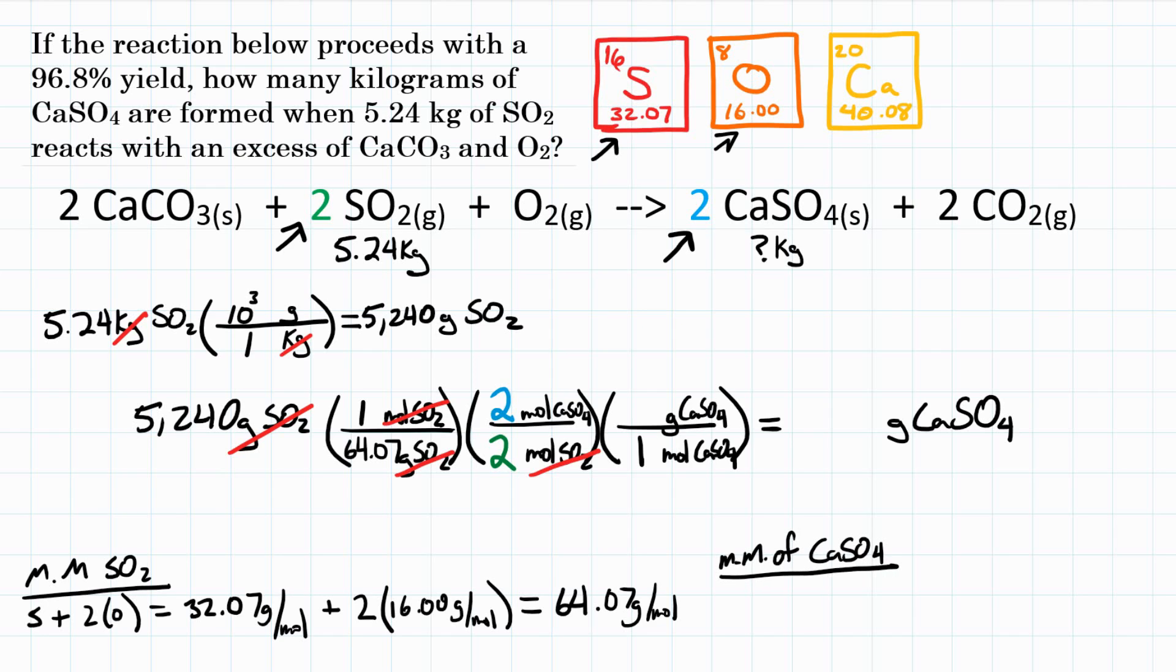That will be a calcium plus sulfur plus four times oxygen. So calcium, looking at the periodic table, is 40.08 grams per mole. Plus sulfur, which is 32.07 grams per mole. Plus four times oxygen, which we already looked at, is 16.00 grams per mole. And we are left with a molar mass of 136.15.